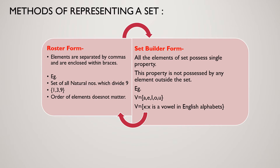In roster form, one thing we have to note down is that the order of elements doesn't matter. For example, if we write the set of all natural numbers which divide 9, then these are 1, 3, and 9. We can write it as {1, 9, 3} or {3, 1, 9} — that will not change the elements of the set.